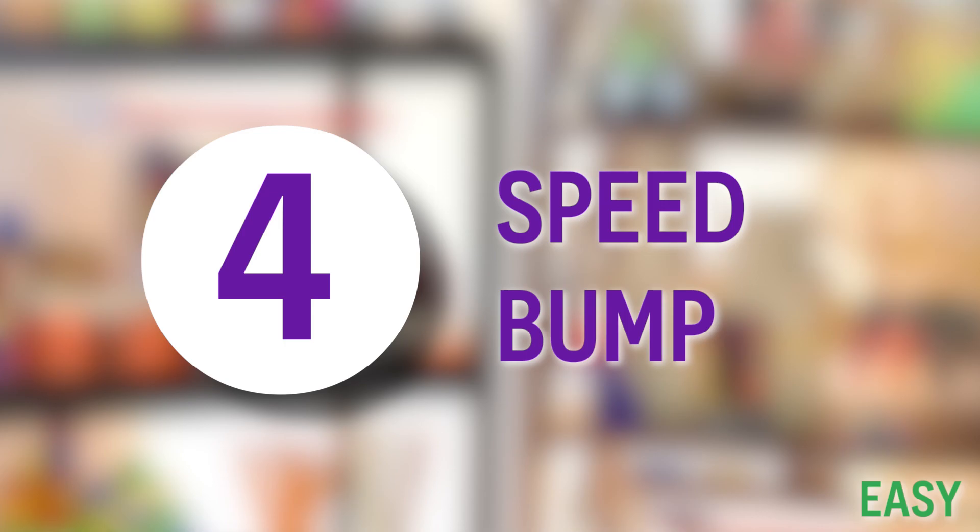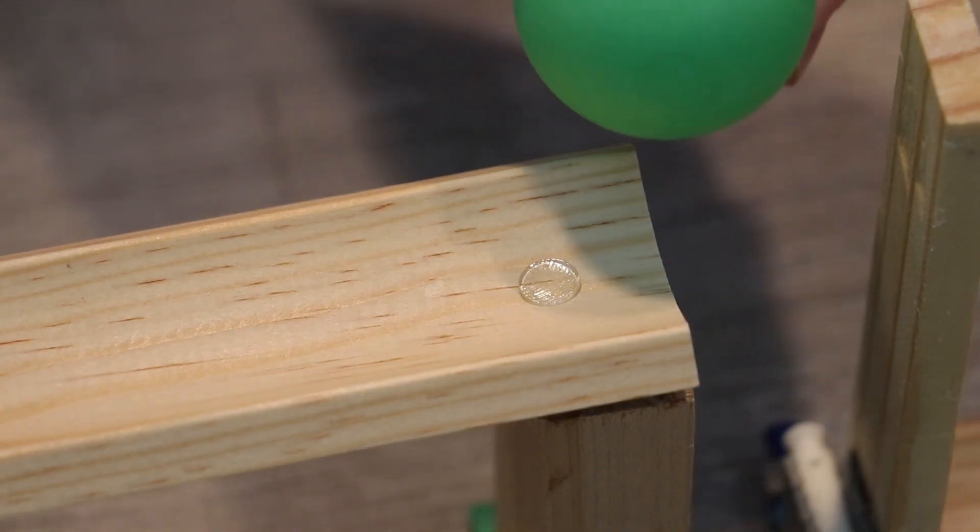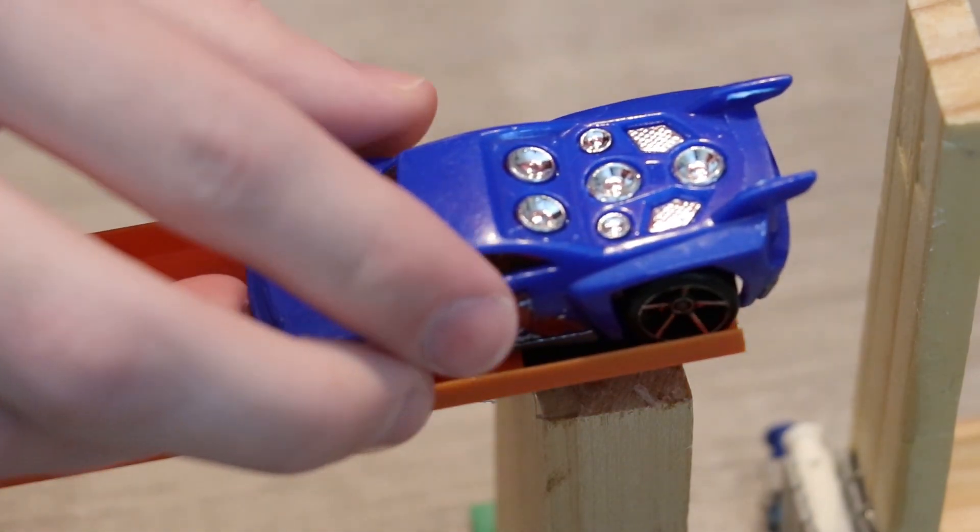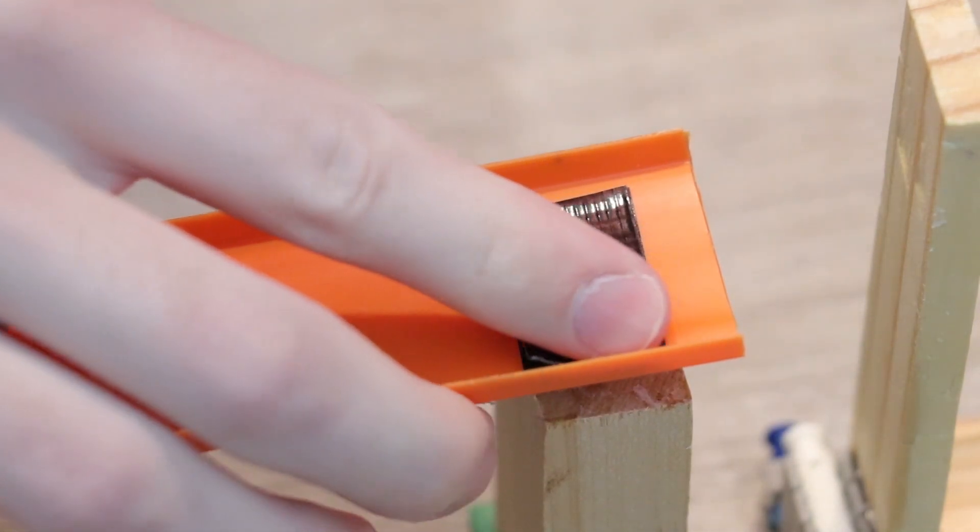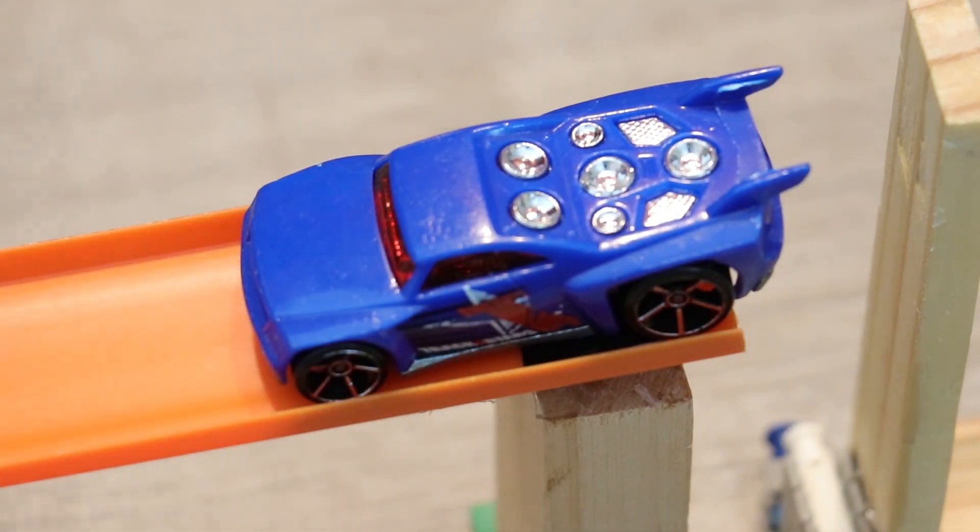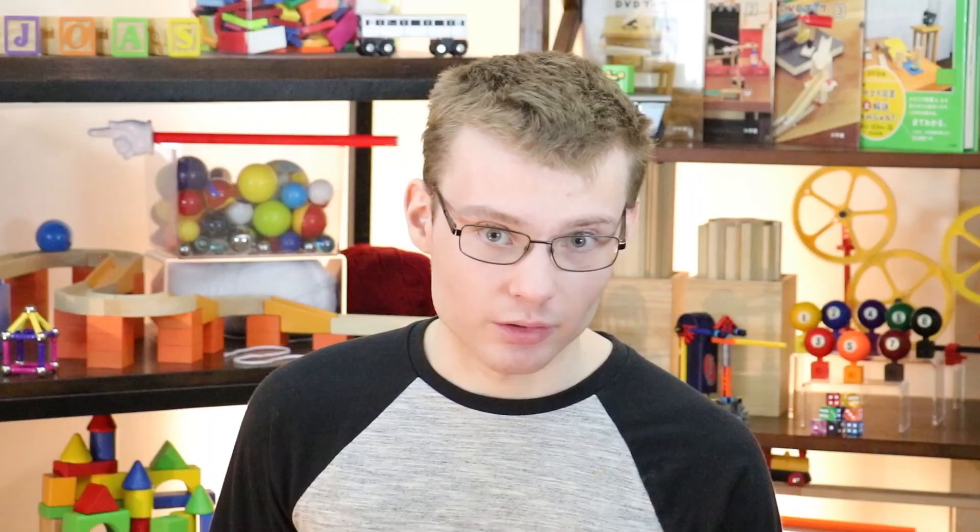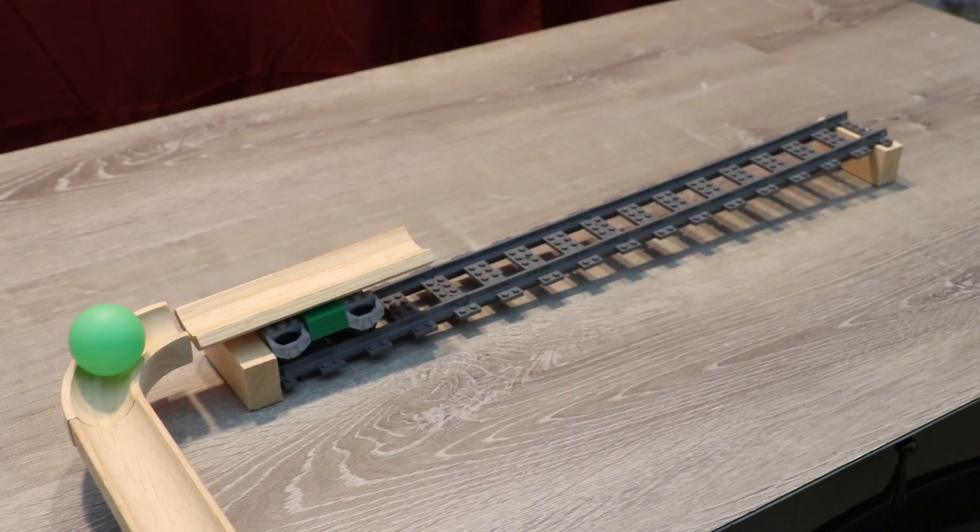Number four, speed bump. A speed bump is a small bump on a track or some kind of surface that is used to hold an object. In this example, the speed bump is in front of the ball, and it provides enough resistance to hold the ball while it's at rest. But the falling domino provides enough energy to push the ball over the speed bump and let it roll down the track. One of the advantages of a speed bump is that to make it more powerful, you just make it bigger. And this is actually really easy to do with layers of tape. Personally, my go-to method for making a speed bump is adding a small dot of hot glue, which is another viable option.